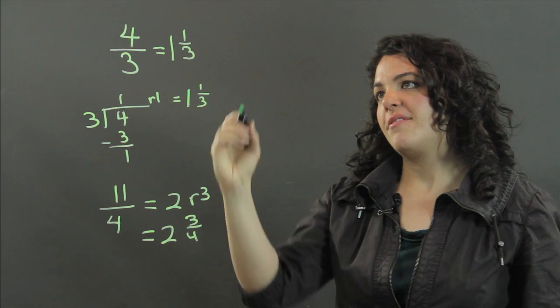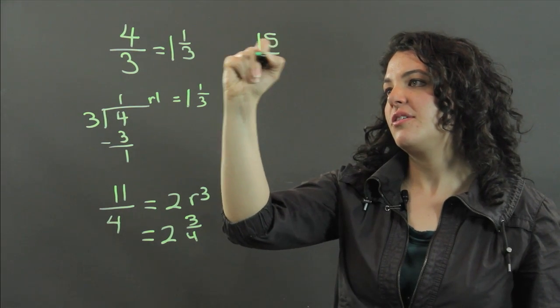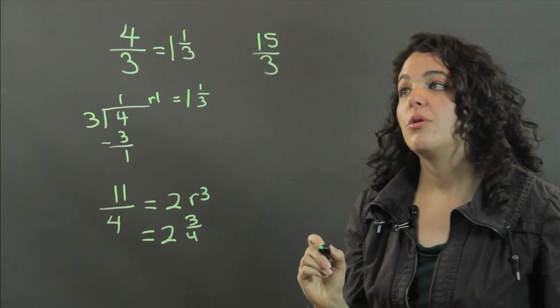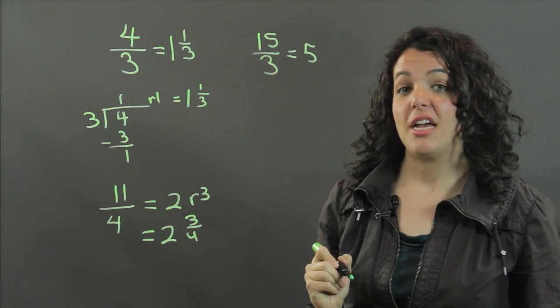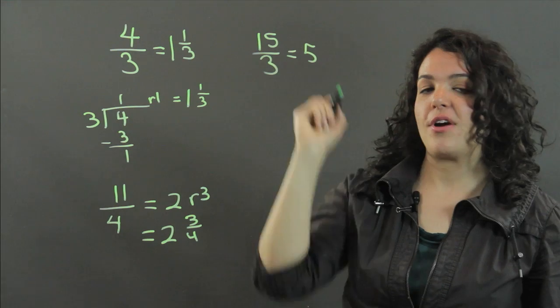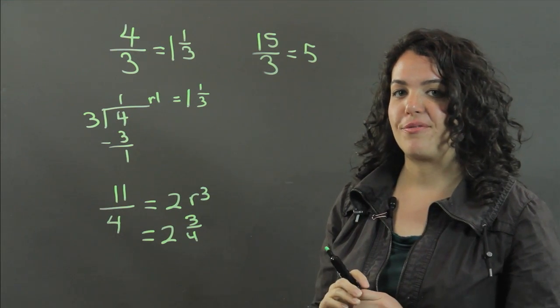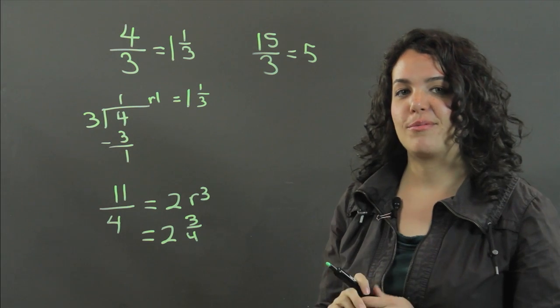Now what if you have a fraction like 15 thirds? When you divide 15 by 3, you get 5. And that is how you rewrite this fraction, so it's no longer an improper fraction. It's just that nice whole number 5.